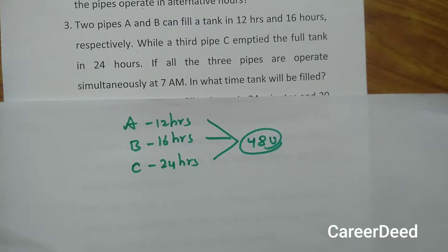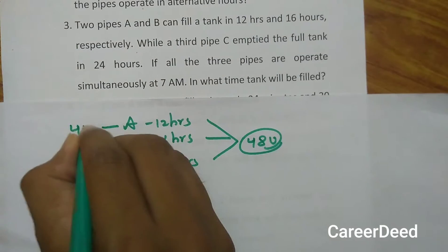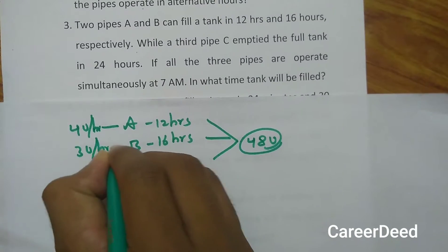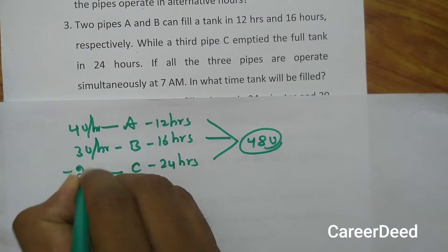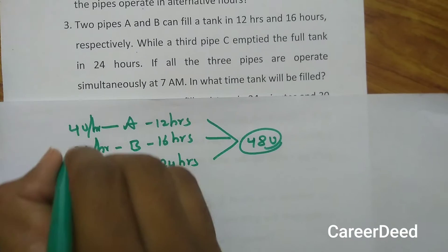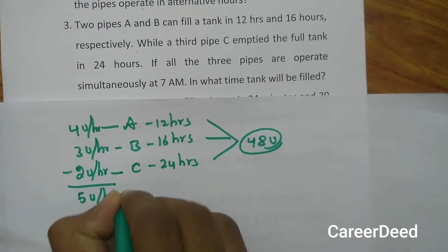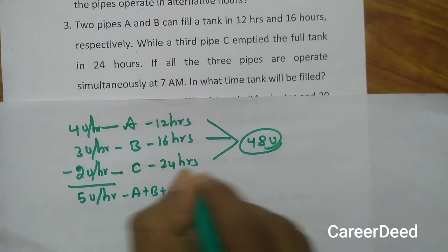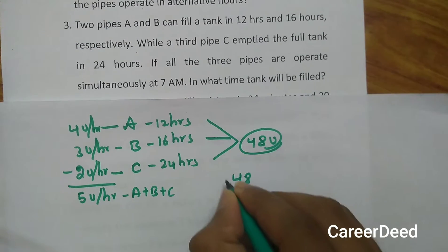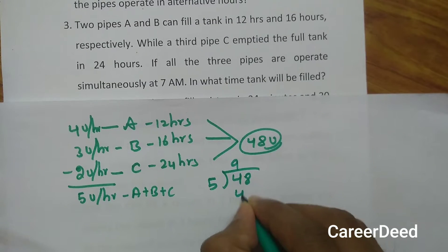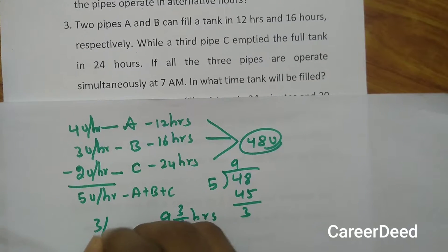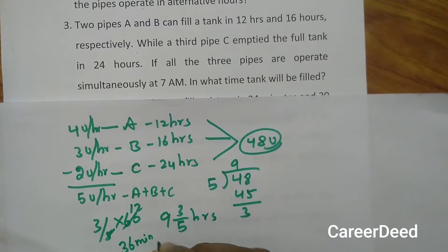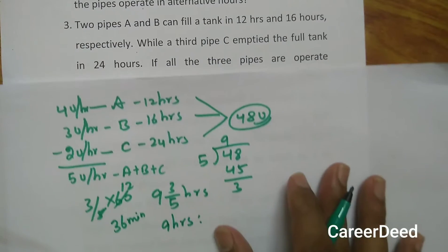Pipe A fills 4 units per hour, pipe B fills 3 units per hour, and pipe C empties 48 units in 24 hours — so C empties 2 units per hour. Working together: 4 + 3 − 2 = 5 units per hour is the net efficiency of pipes A, B and C combined. We have 48 units to fill at 5 units per hour: 48 ÷ 5 = 9 remainder 3, giving 9 and 3/5 hours. Converting 3/5 hour to minutes: 3/5 × 60 = 36 minutes. So the tank fills in 9 hours and 36 minutes.